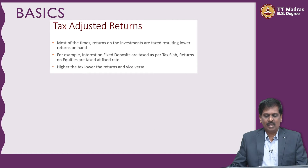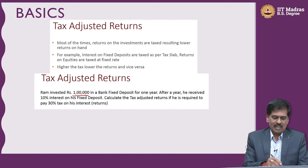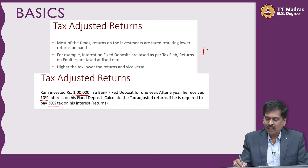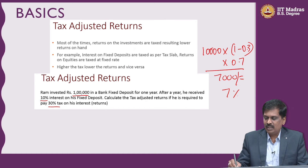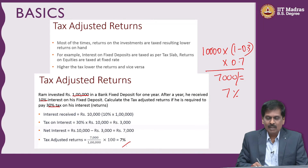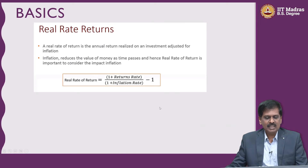The next thing we learned about is tax-adjusted returns. Fixed deposits and debt mutual funds are taxed at the normal slab rate. If you invest 1 lakh rupees at 10 percent, you get 10,000 rupees in interest. Assuming you are in the 30 percent tax bracket, you get 10,000 multiplied by (1 minus 0.3), which is 10,000 multiplied by 0.7 — so you actually get only 7,000 rupees, or 7 percent. The formula is: tax-adjusted rate = nominal rate multiplied by (1 minus tax rate).